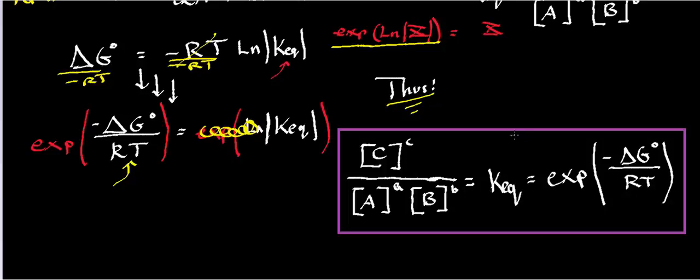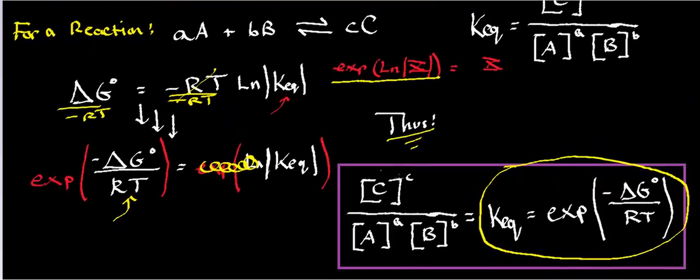So basically, that's the important part of your expression right there. KEQ is equal to the exponential of negative delta G standard at equilibrium divided by RT. And then also remember for the reaction that we had used previously, that this is the actual expression in terms of concentrations in the reaction for the equilibrium constant.